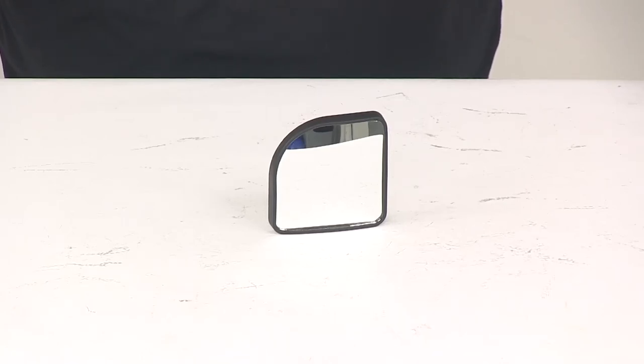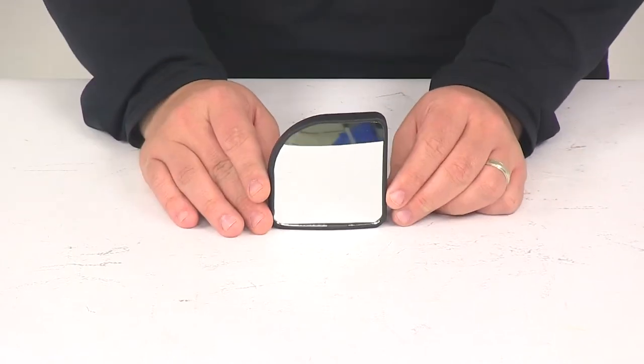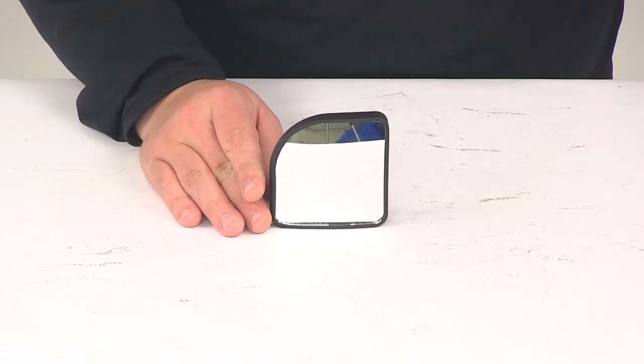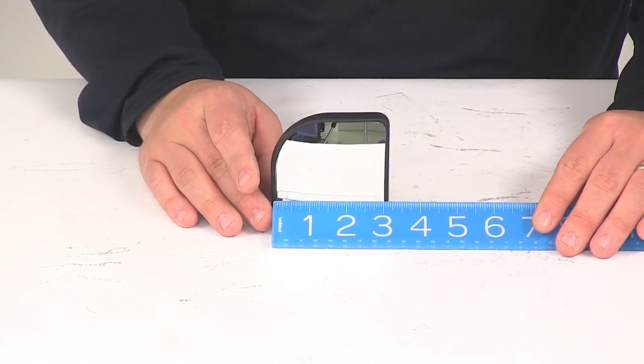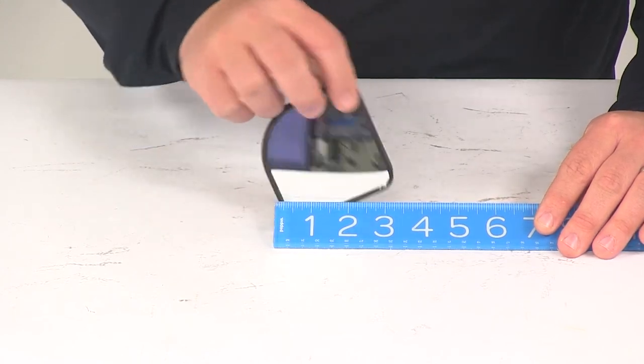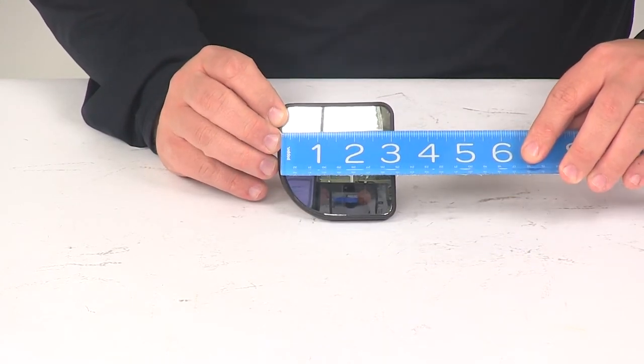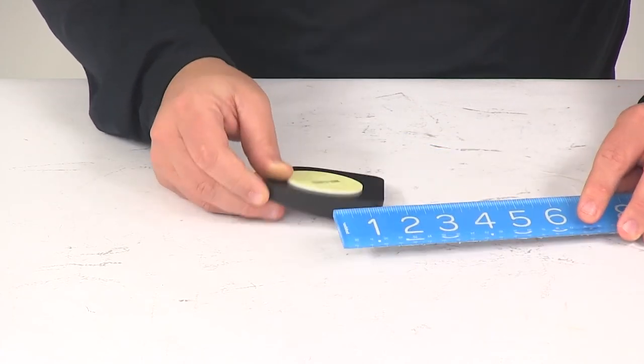Today we're going to be taking a look at the SEPA hotspot convex mirror. The actual mirror is going to give us a measurement of about three inches by three inches, and that's measuring at the widest points.